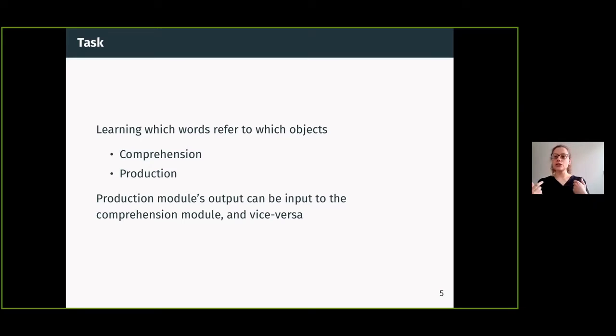Then we can feed this object to the production module which outputs a label. This is a sort of introspective quality of the model that we can use both to train it in a self-supervised way and also to select input that is relevant in the current state of knowledge.